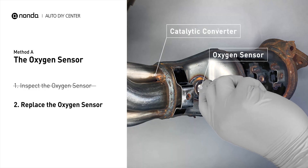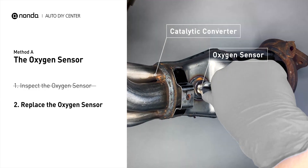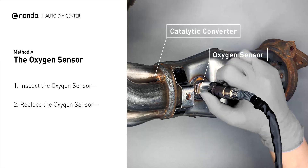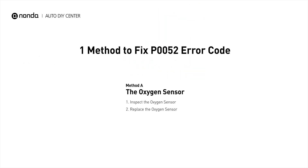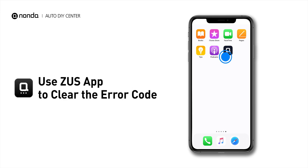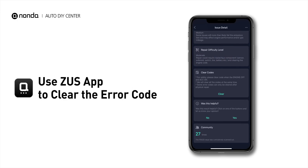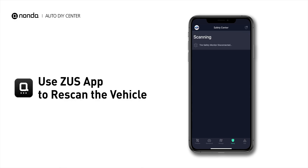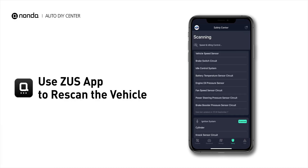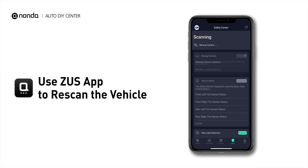If there is no damage found on the oxygen sensor, you would need to take your car to consult professional mechanics. Here is one of the most practical solutions to fix the P0052 error code. After the repair, you can use the Zeus app to clear the error code, and tap the Rescan button one more time to make sure everything is fine with your vehicle.